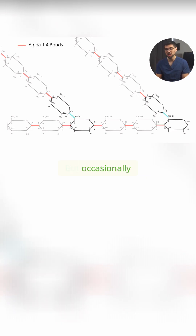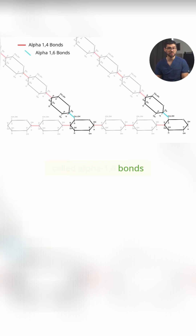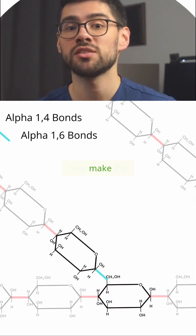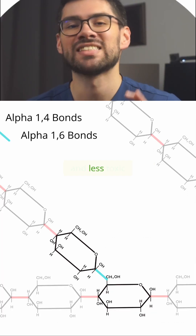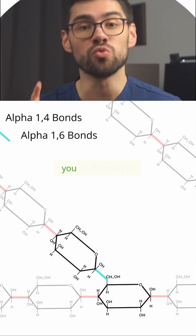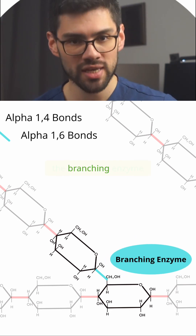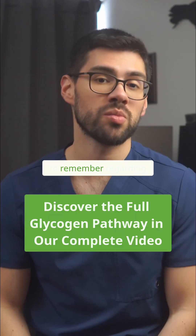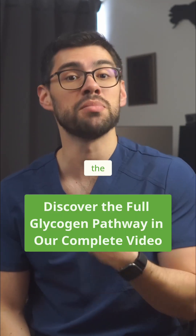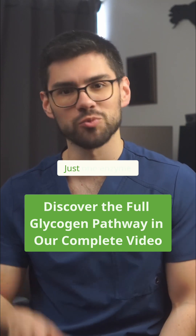But occasionally, like here and here, different branching bonds are created. These bonds, called alpha-1,6 bonds, help make the structure more compact and less toxic. They're formed by the first enzyme you really need to remember, which is called the branching enzyme. And that's really all you need to remember regarding the buildup of glycogen — just one enzyme.